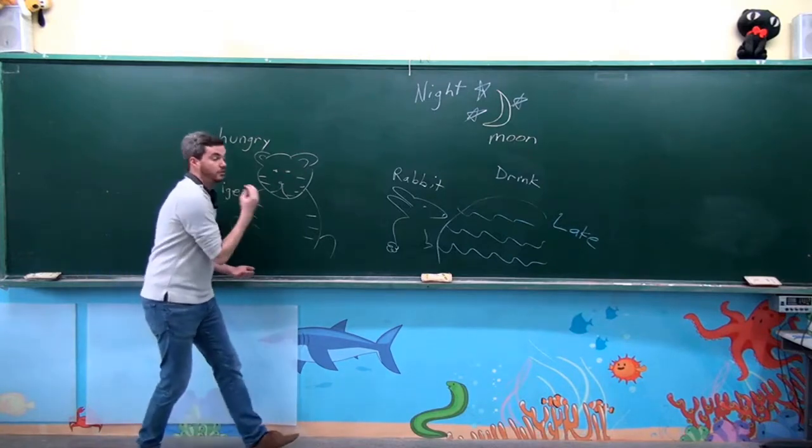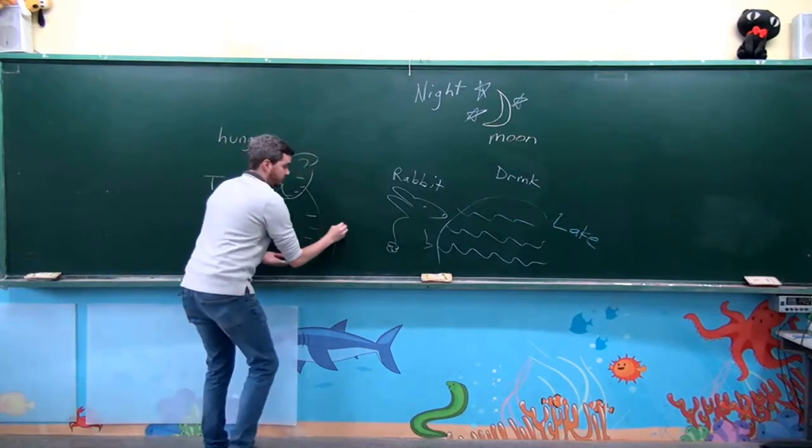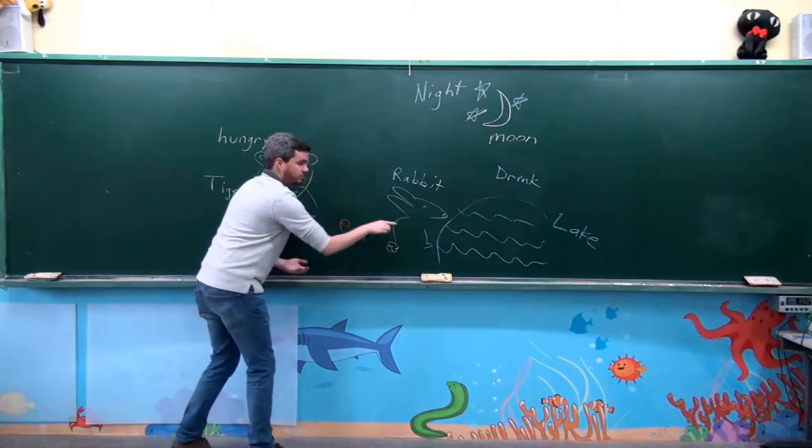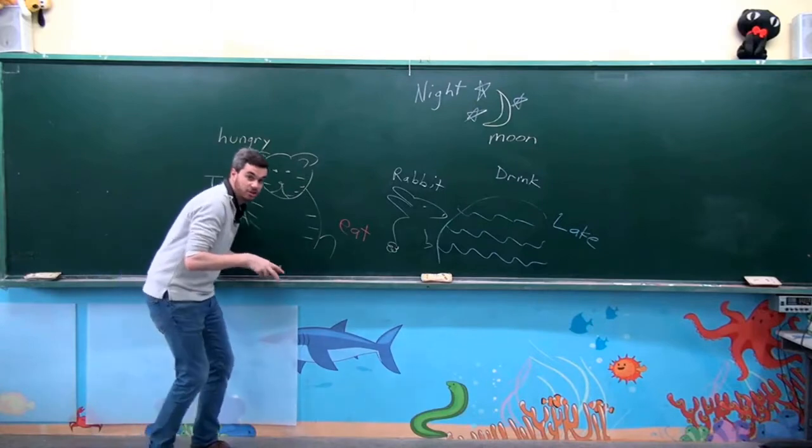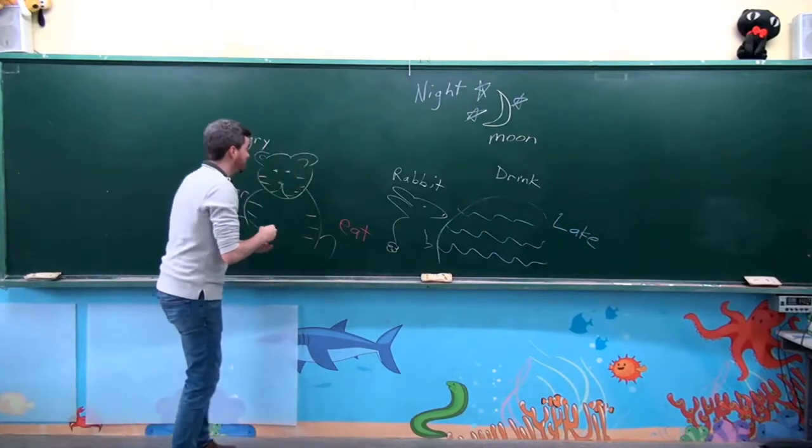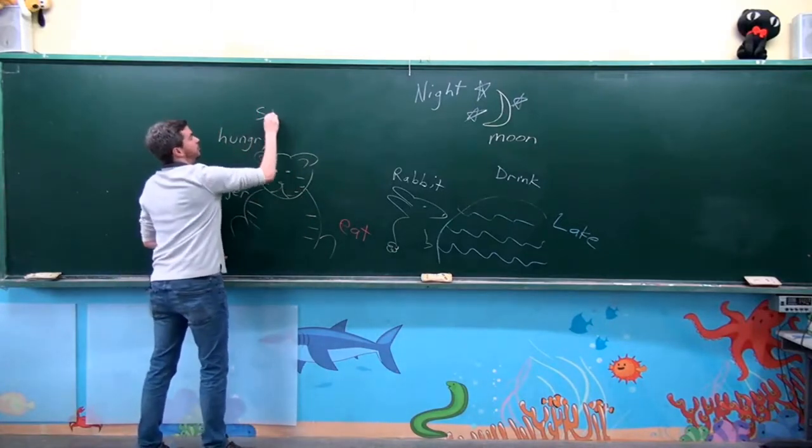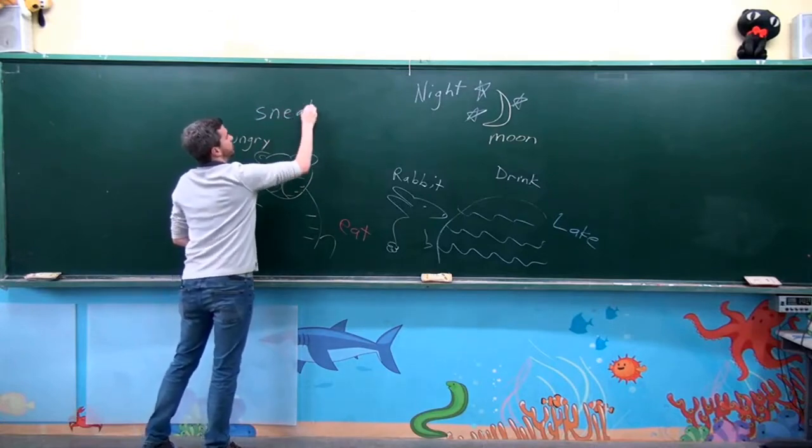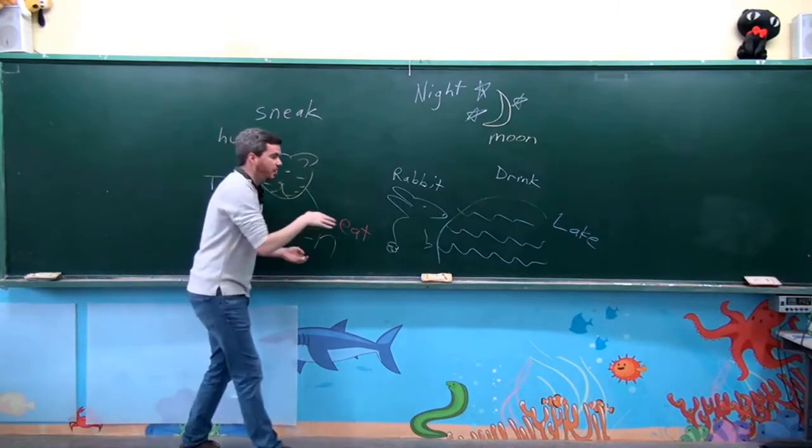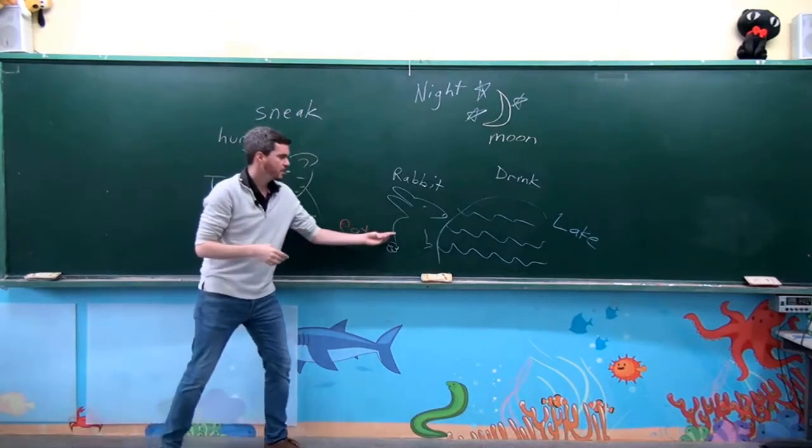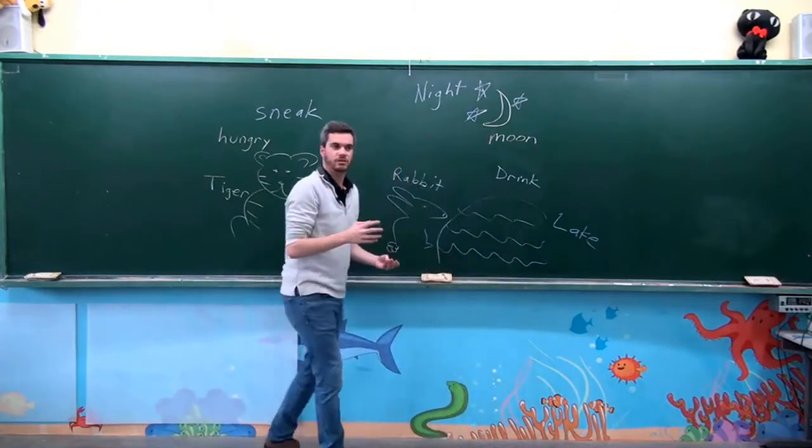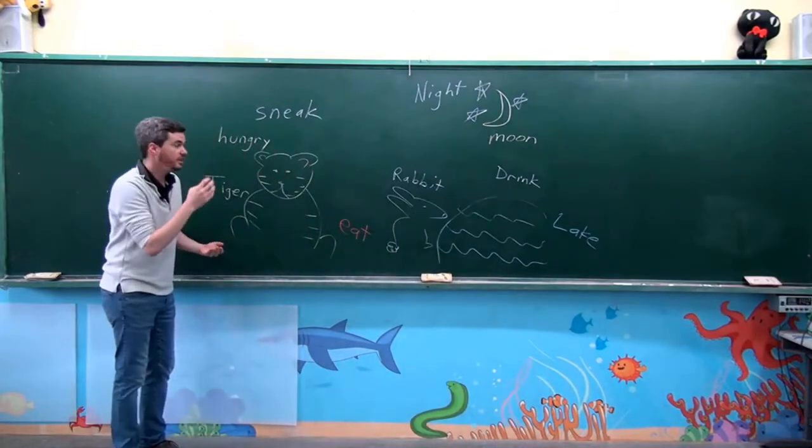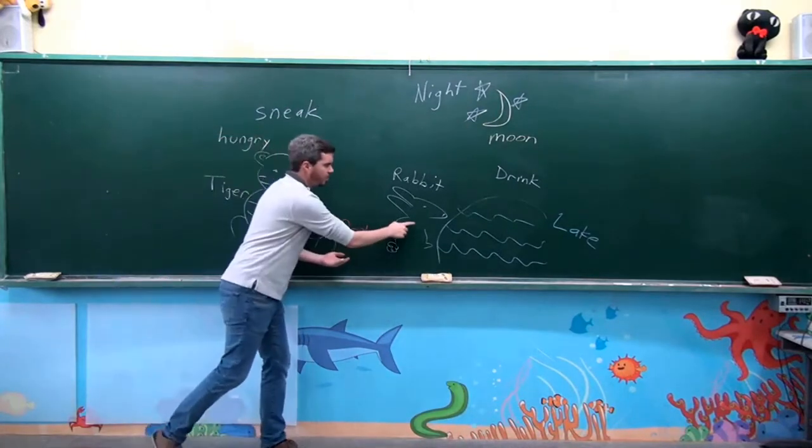Now, the tiger is hungry. And the tiger wants to eat the rabbit. The tiger starts to sneak up on the rabbit. Starts to sneak up on the rabbit. And the rabbit turns. Oh, wow. See, the tiger is going to eat it.